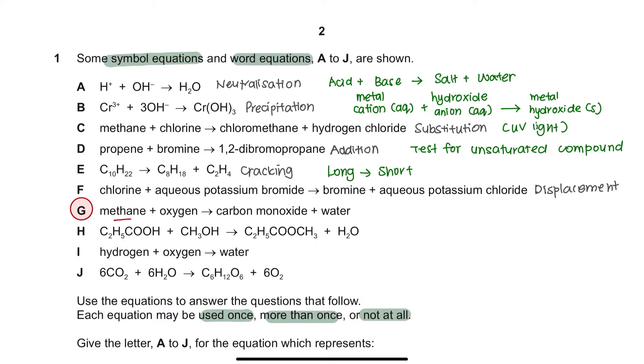Equation G. We have alkane burning in the presence of oxygen. This is combustion. However, since carbon monoxide is formed instead of carbon dioxide, this would be incomplete combustion.